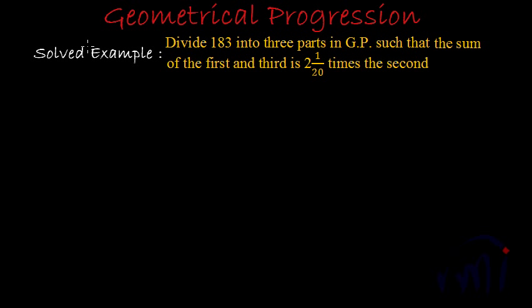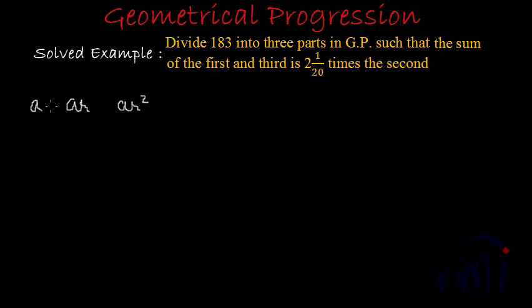Suppose the three terms in GP are a, ar, and ar², where a is the first term and r is the common ratio. If we can find the values of a and r, we can find all these terms. Since we have to divide 183 into three parts in GP, these three parts together will equal 183. This is the first equation.